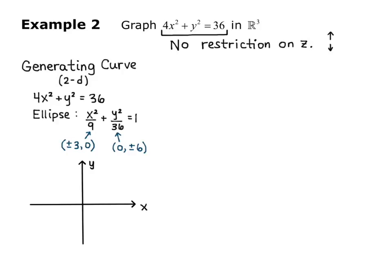If we graph that on the XY plane, we'll have a tall, skinny ellipse. It goes from negative 3 to 3 on the x-axis and negative 6 to 6 on the y-axis.